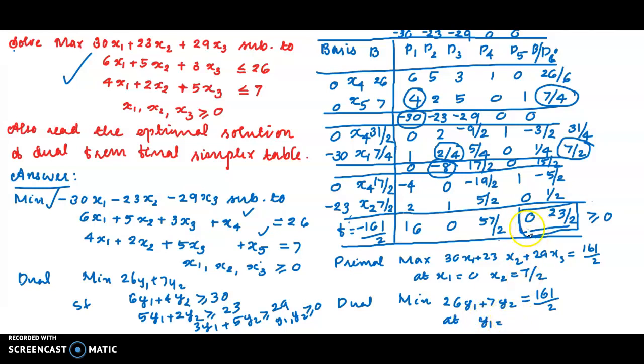That variable is y₁ value. x₄ net evaluation, y₁ is equal to 0. The variable is y₂ value. x₅ net evaluation 23 by 2. This is our multiplier. Minus π₁, minus π₂. Net evaluations are net evaluation. That is cⱼ plus sigma aⱼpᵢ. All the way to minus pᵢ. Minus π₁, minus π₂.